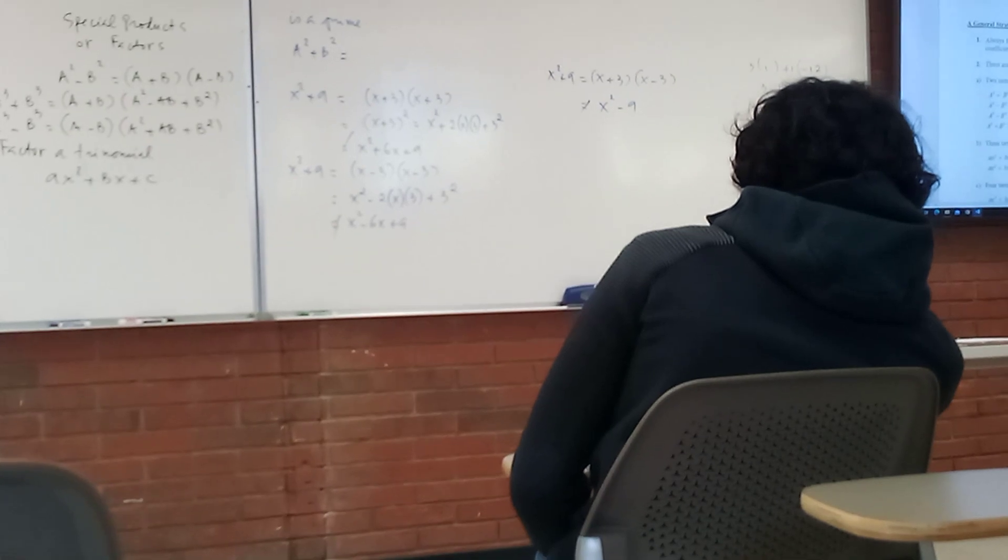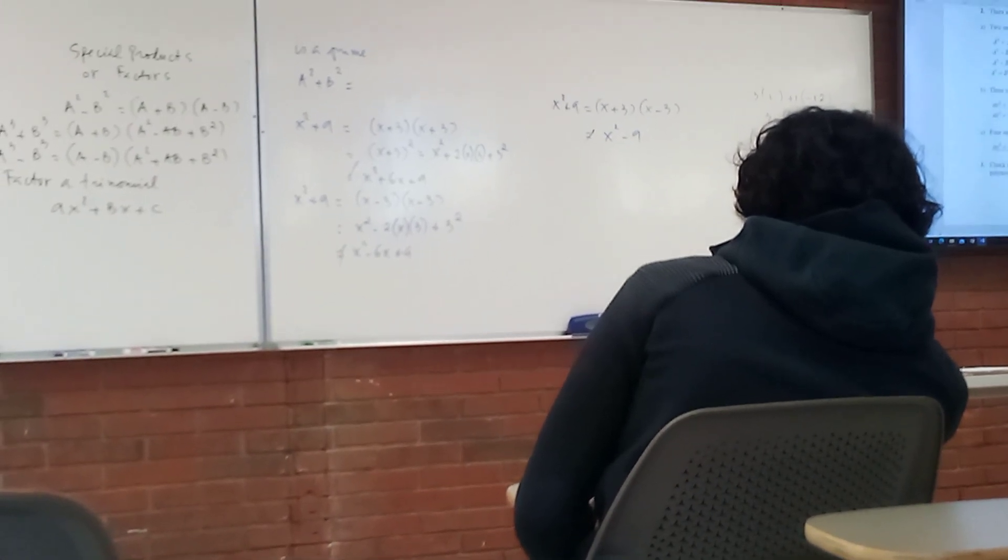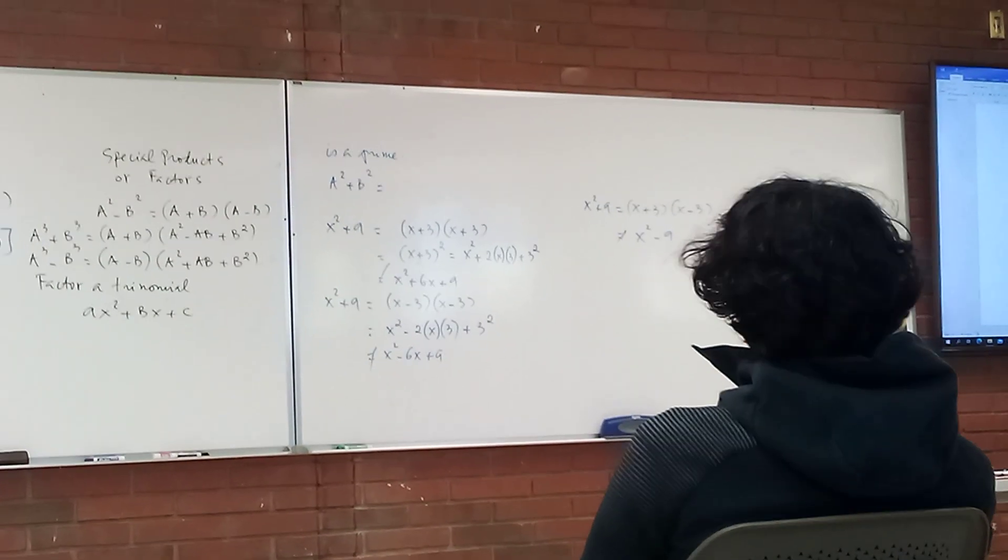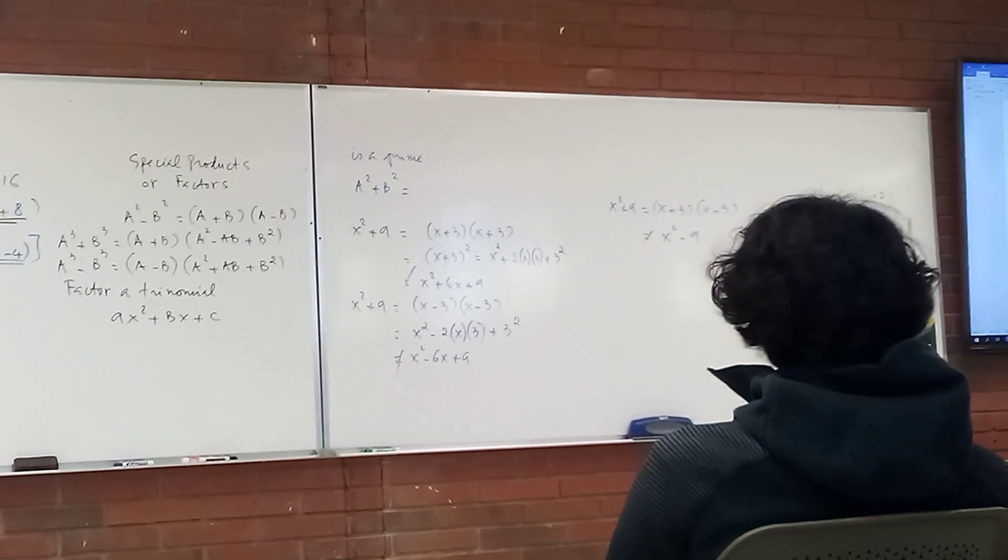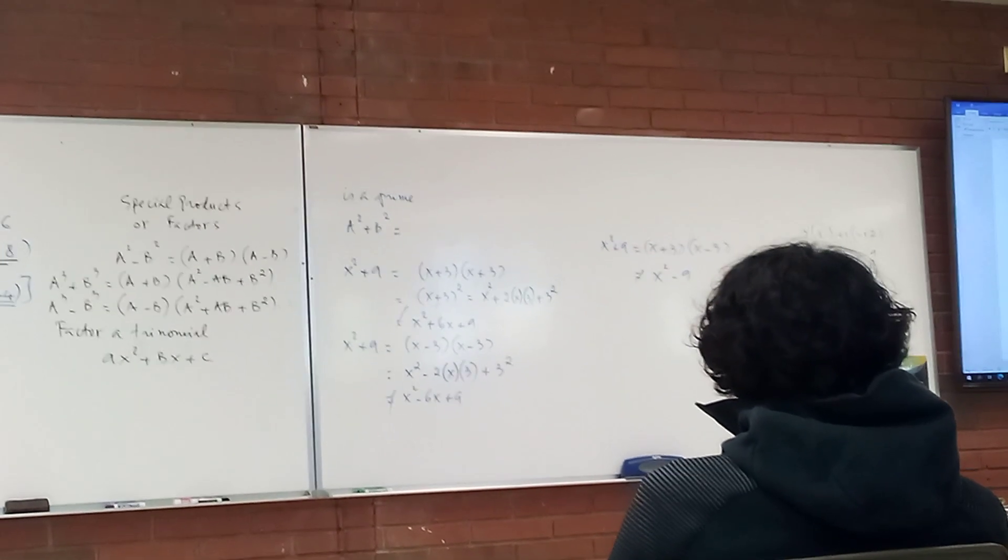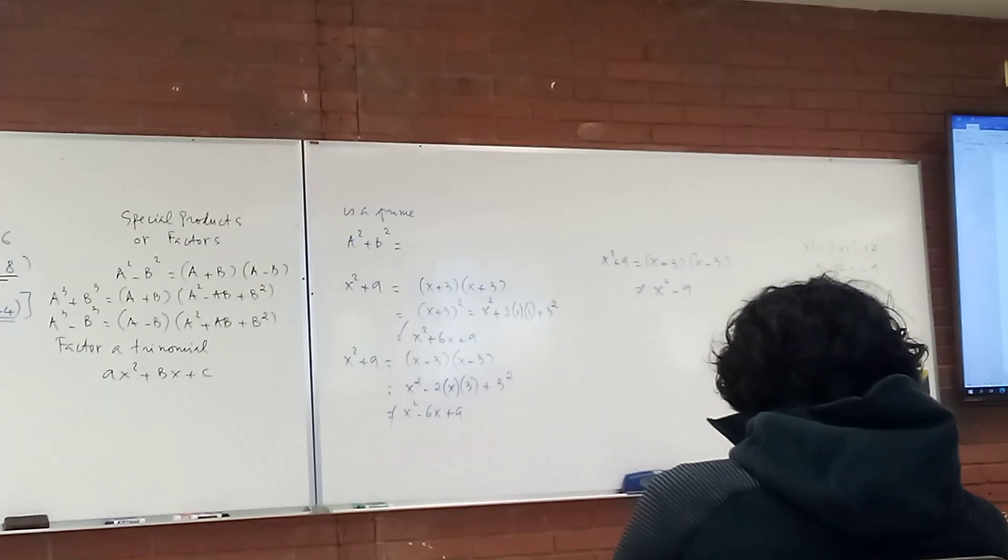The last one: 4 terms. If you see 4 terms, group it. One group, second group. Check your factors by multiplying them out, and the result will be the same as the original polynomial.